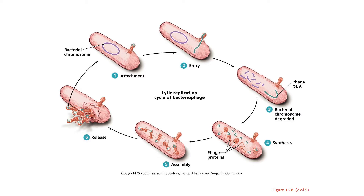Step one: attachment. T4 and E. coli would randomly collide, but then T4 would realize that this is the right host cell because it would bind to a receptor on the E. coli strain B. That binding of bacteriophage to receptor lets it know that this is the correct host cell.